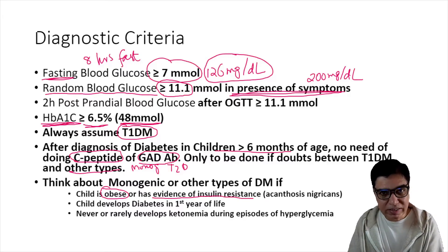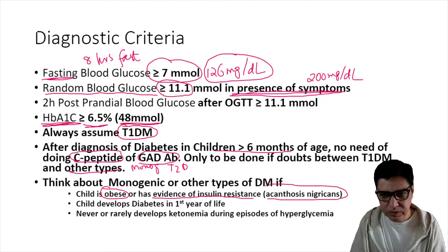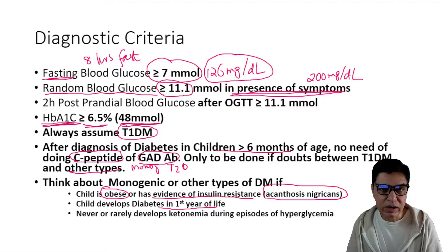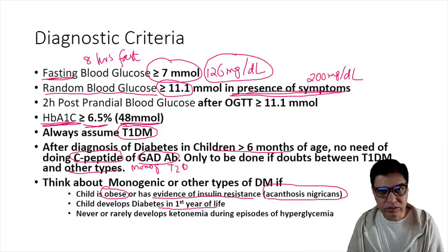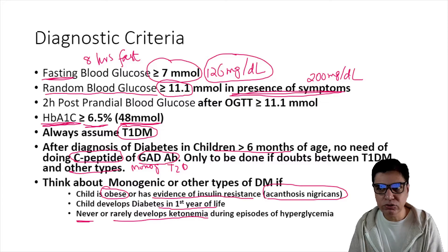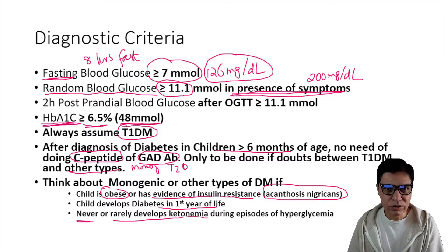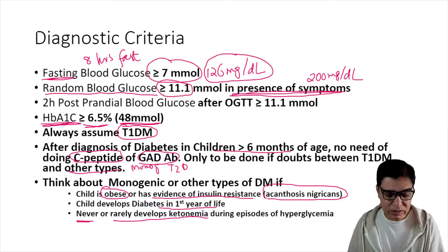Also suspect Type 2 if a child rarely or very rarely develops ketonemia despite very high blood sugars — for example, ketones not going beyond 0.2-0.3 mmol even with blood glucose of 30-35 mmol. In such cases, further workup with C-peptide levels or GAD antibodies can help differentiate Type 1 from Type 2 diabetes.